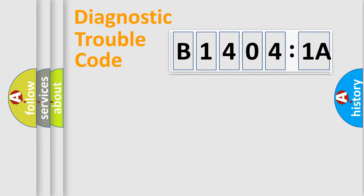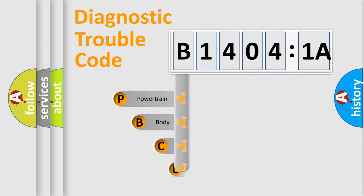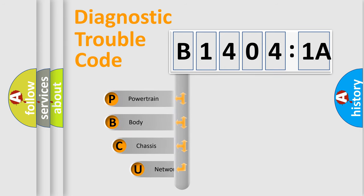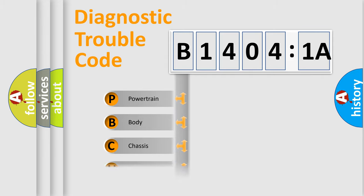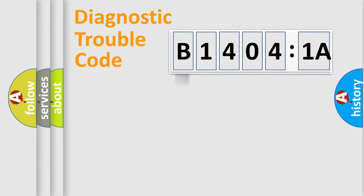Let's do this. First, let's look at the history of diagnostic fault code composition according to the OBD2 protocol, which is unified for all automakers since 2000. We divide the electric system of the automobile into four basic units: Powertrain, Body, Chassis, and Network.